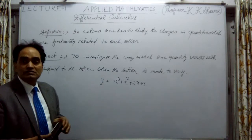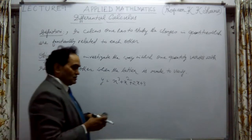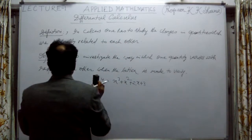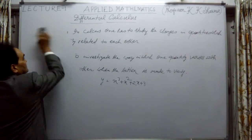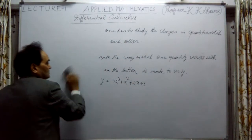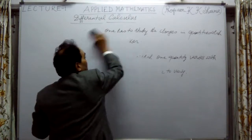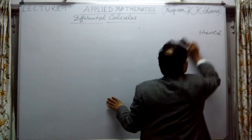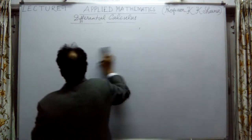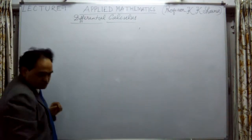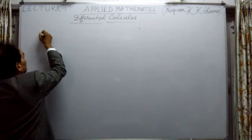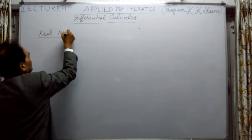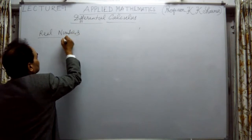Now we have to talk about what are the quantities which are being discussed here. Quantities are mostly real numbers which are discussed in differential calculus. The real numbers are denoted by R. Let me talk about real numbers — the quantities are mostly real numbers, or we discuss about real numbers.